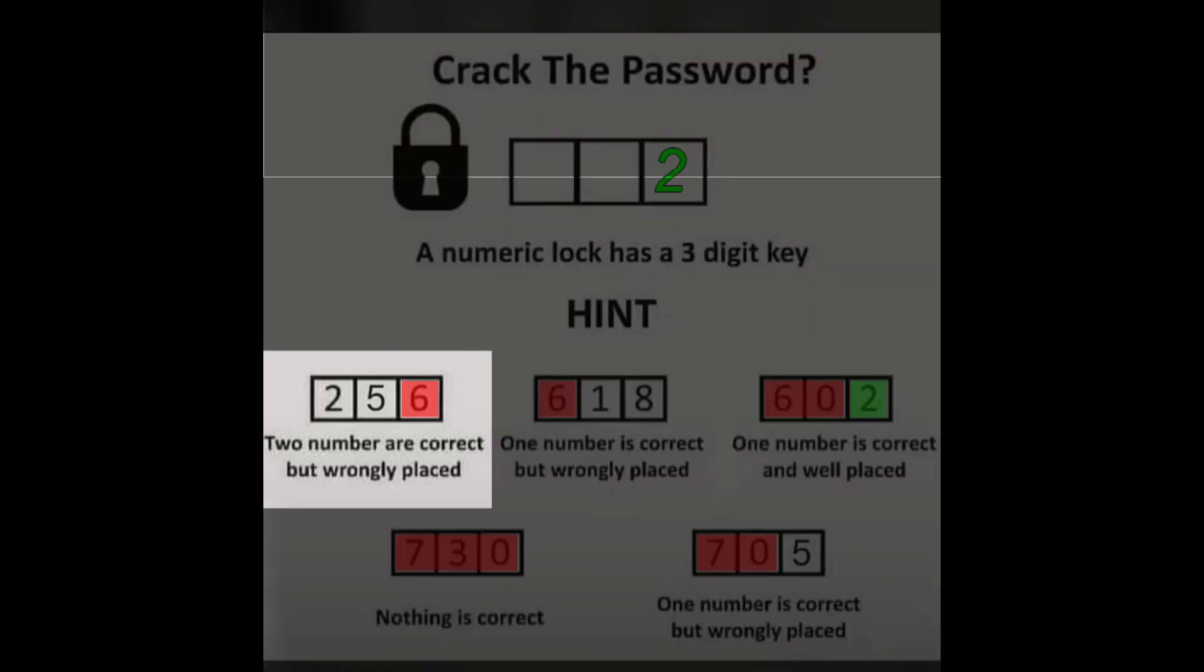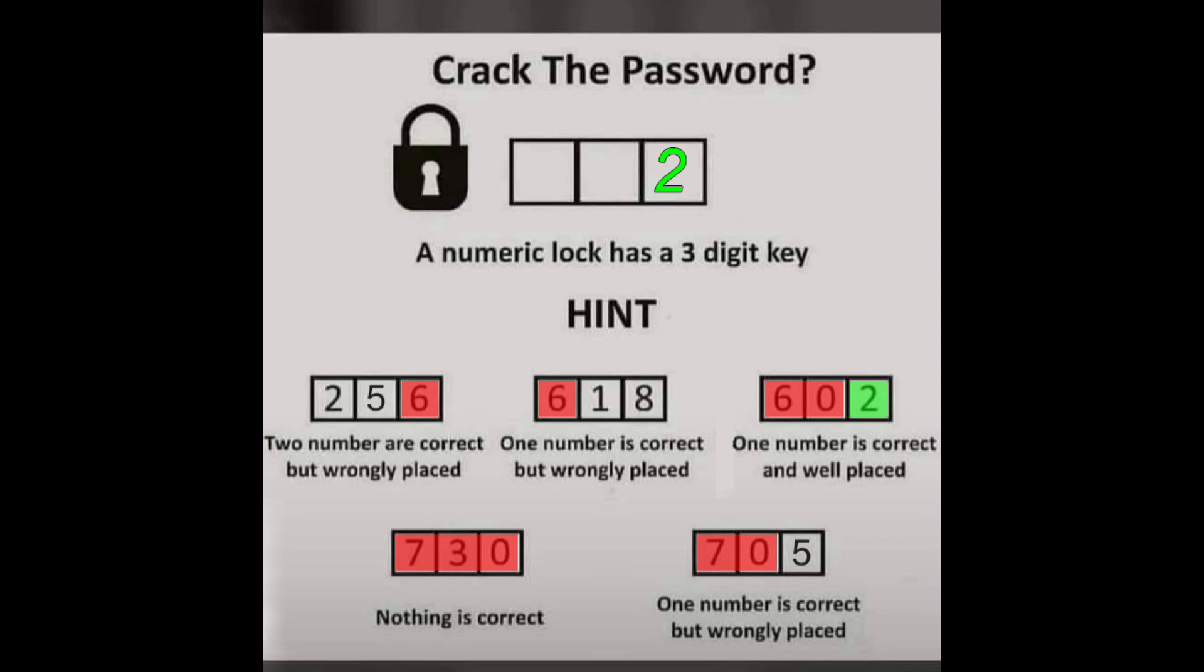Going to hint number three, we have two correct numbers and not in the correct place. We already know that number six is wrong and number two is correct. This leaves us with number five as a correct number but not in the correct place, and the only place left is at the left.